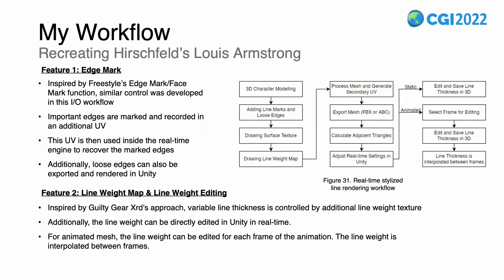The second feature is the line-weight map and line-weight editing, inspired by Guilty Gear's approach. Variable line thickness is controlled by an additional line-weight texture. Additionally, the line-weight can be directly edited in Unity in real-time. For animated meshes, the line-weight can be edited for each frame of the animation, and the line-weight is interpolated between frames.